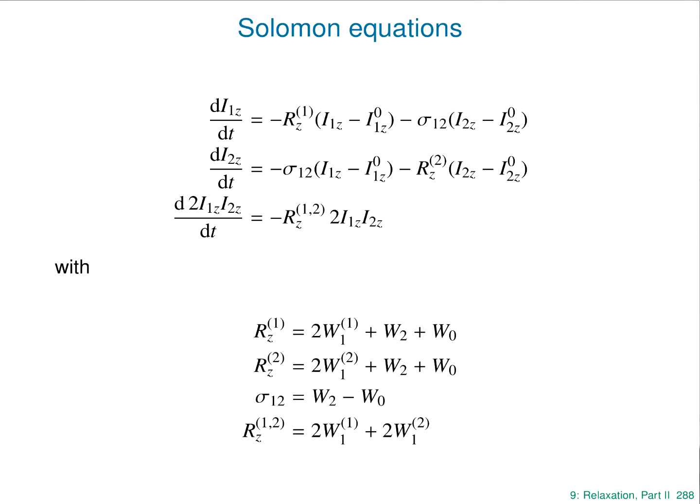The Solomon equations now look simpler. In the first equation: RZ times I1Z is the relaxation loss from spin 1, and sigma-1,2 times I2Z is the feed from spin 2. In the second equation: RZ times I2Z is the loss from spin 2, and sigma-1,2 times I1Z is the feed from spin 1.